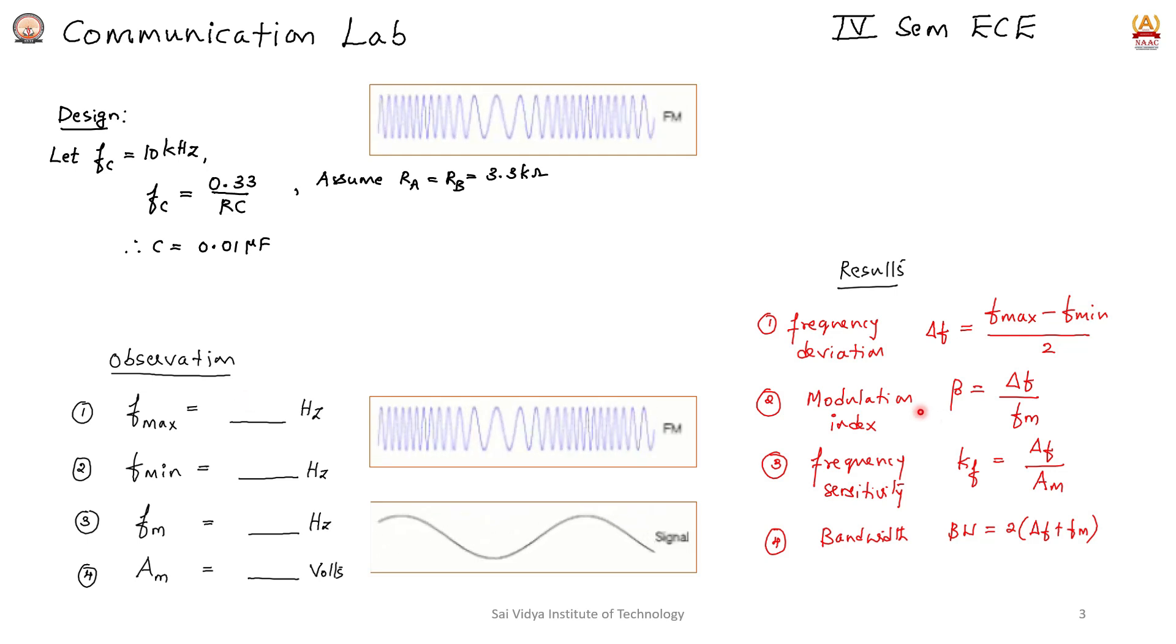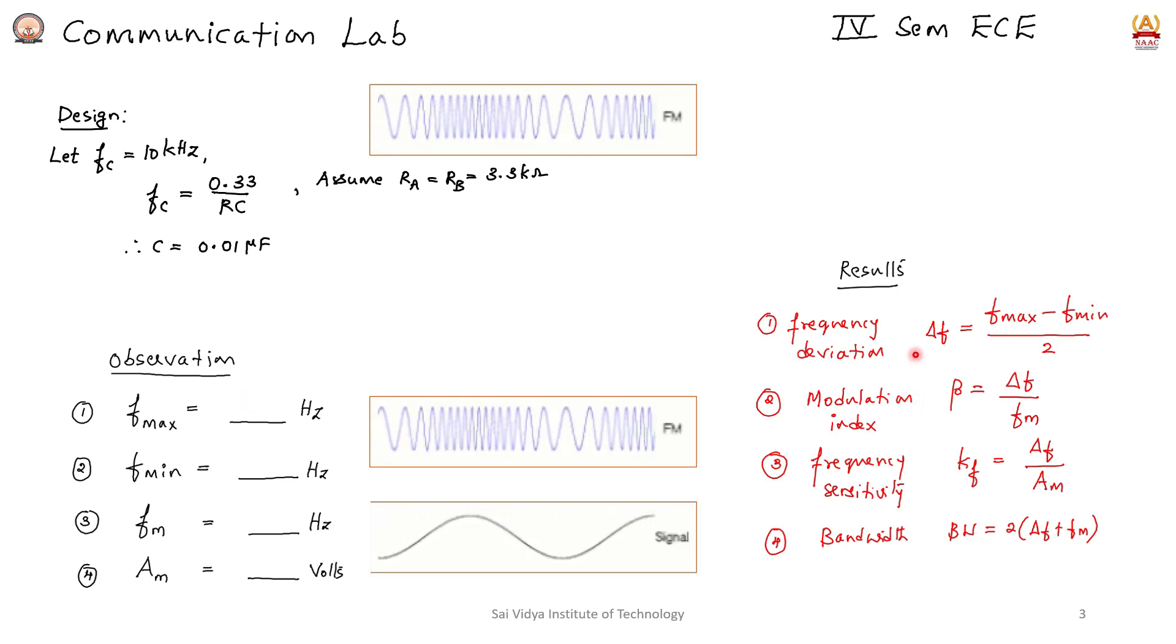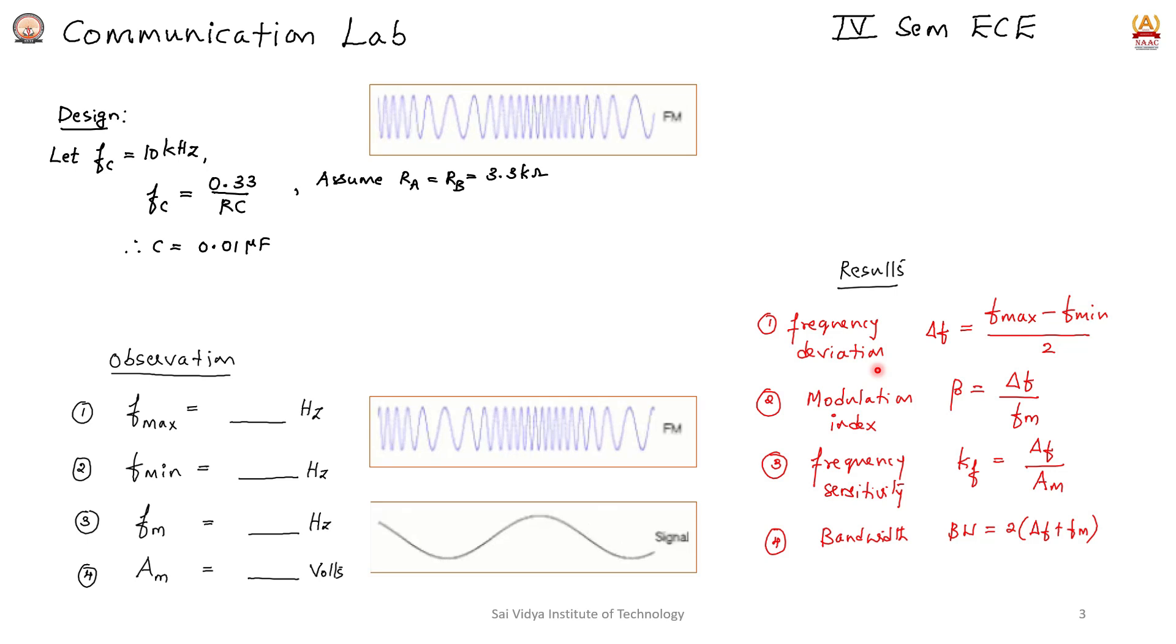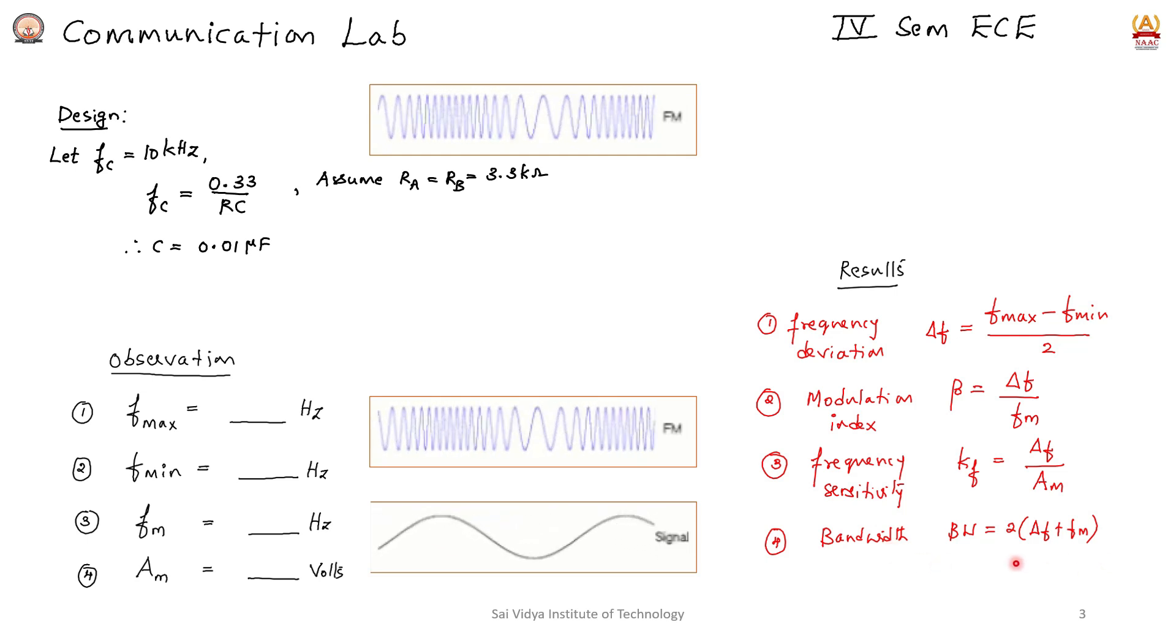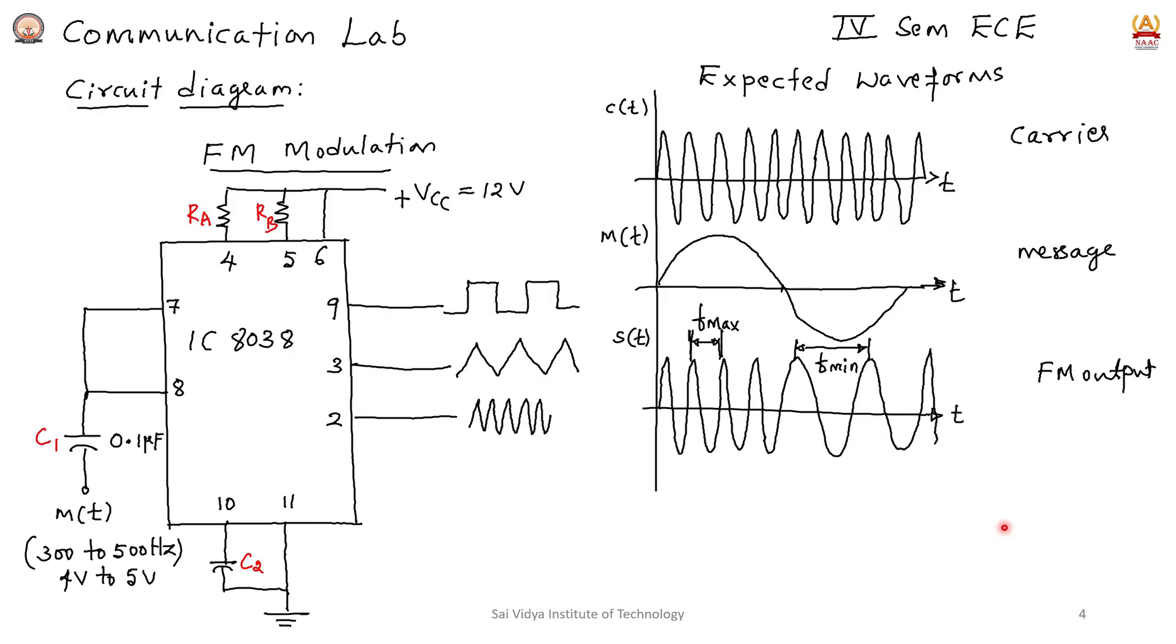Based on the observations, we calculate frequency deviation, modulation index, frequency sensitivity, and bandwidth for FM as shown in the equations. This is the circuit diagram of FM generation using the 8038 IC.